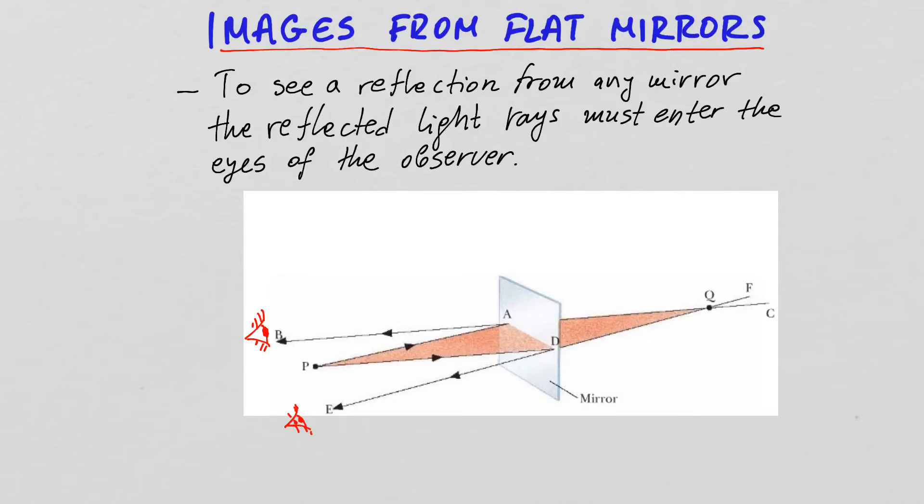And so they are seeing the image of point P as if it's coming from an object at point Q. But the important part is that if any of those two observers was not in the way of the reflected rays here or here, they would never see the image of P behind the mirror. So they will never see that image Q right here.